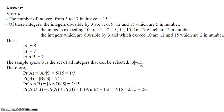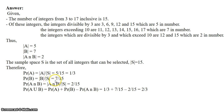Once we have noted all these things, we can easily find the probabilities. Probability of A is the possible outcomes of event A divided by the sample space: 5 divided by 15, which results in 1/3. Probability of B is 7 divided by 15, so P(B) = 7/15. Probability of A intersection B is 2 divided by 15, so P(A∩B) = 2/15.